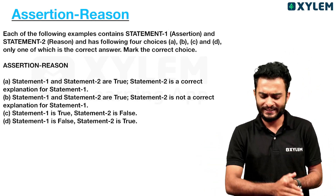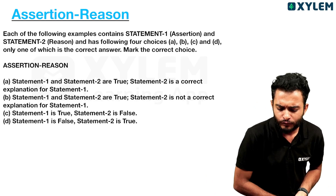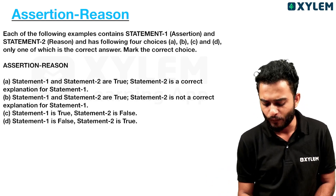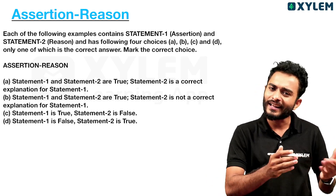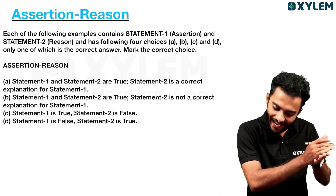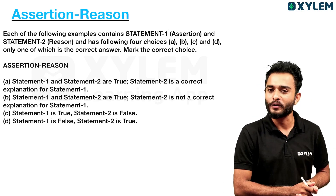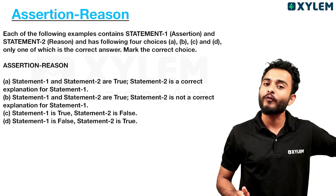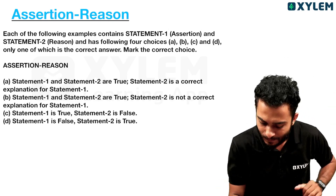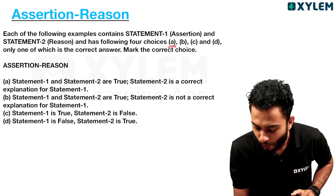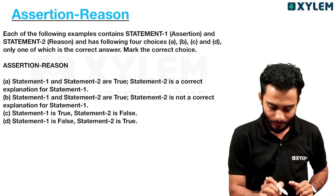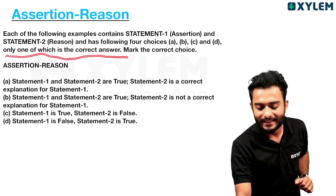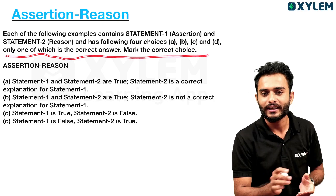Now, Assertion-Reason. Each of the following examples contains Statement 1, that is Assertion, and Statement 2, that is Reason. And it has the following four choices: A, B, C, and D. Only one of which is the correct answer. Mark the correct choice.